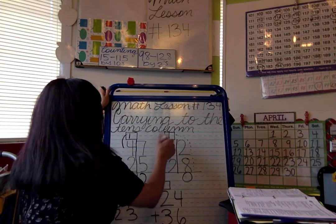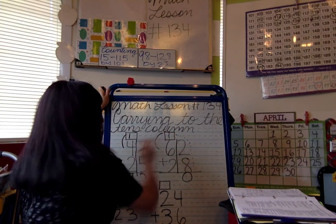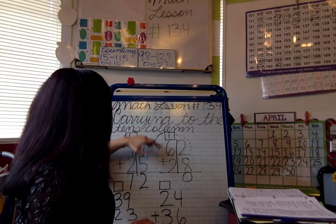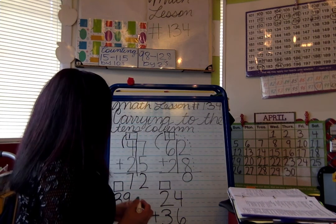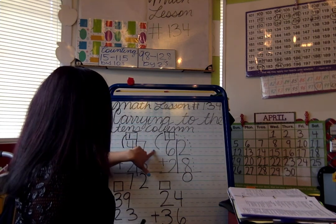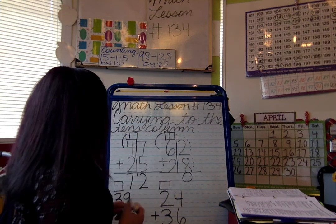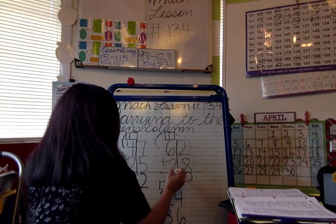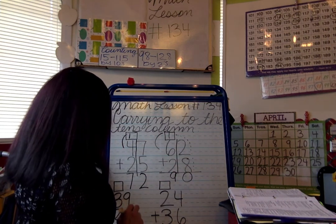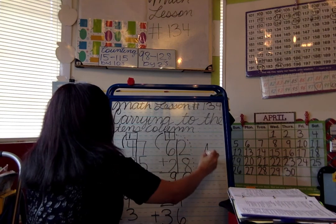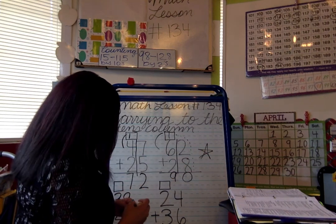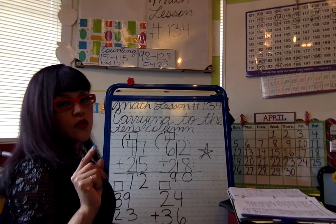One plus six is seven, and seven plus two is nine. The answer is 90. If you got it correct, give yourself a star — awesome job!